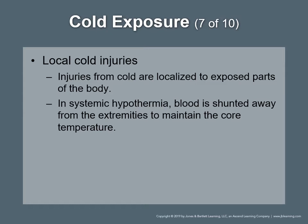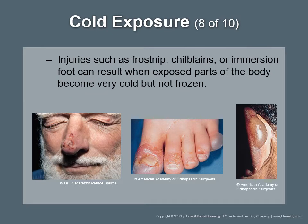Local cold injuries: injuries from cold are localized to exposed parts of the body. In systemic hypothermia, blood is shunted away from the extremities to maintain core temperature. Both local and systemic cold exposure injuries can occur in the same patient. Injuries such as frostnip and immersion foot can result when exposed parts of the body become very cold but not frozen.